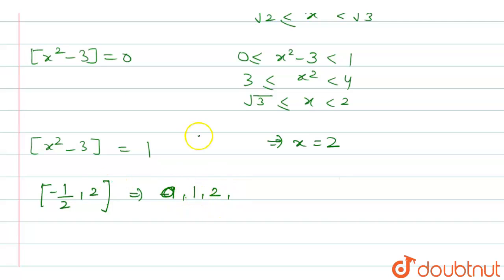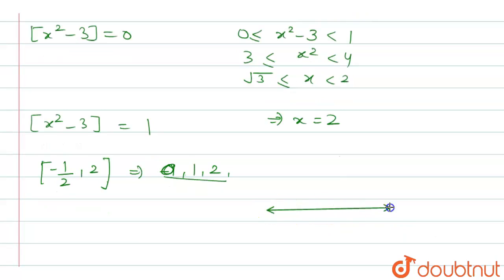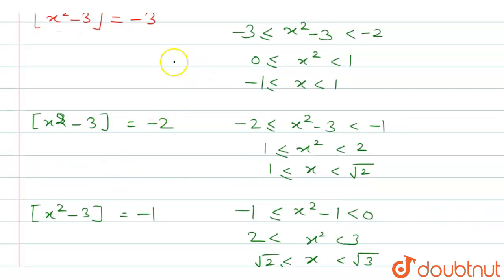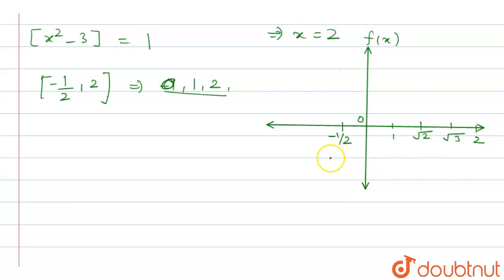Now let's plot the graph of f(x). On the x-axis, mark the points: -1/2, 0, 1, √2, √3, and 2. When x ∈ (-1, +1) — restricted to [-1/2, 1) — f(x) = -3. So between -1/2 and 1, the graph is flat at -3. At x = 1, there is a discontinuity.